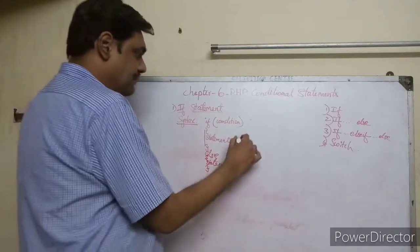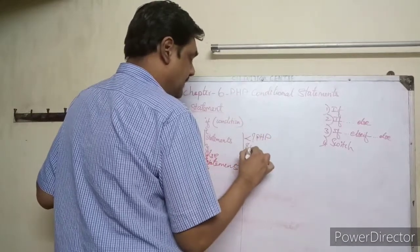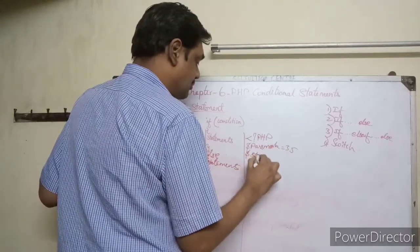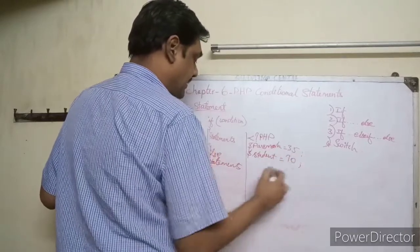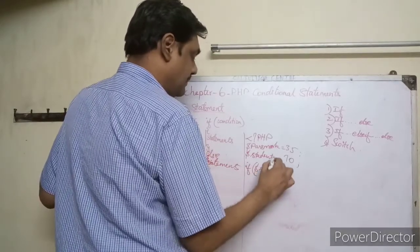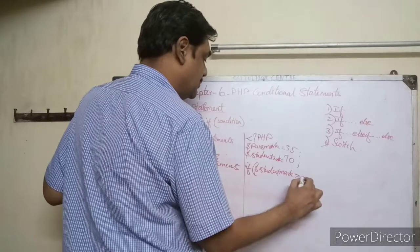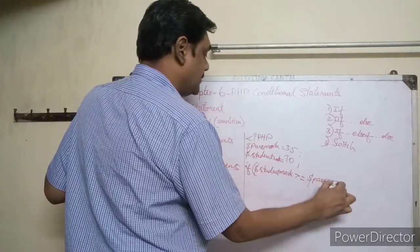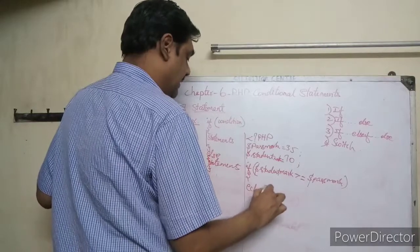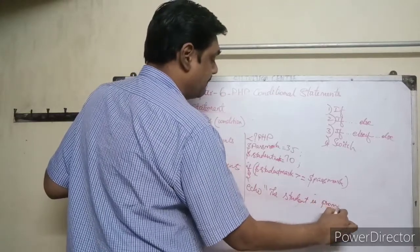For example: dollar pass_mark equals 35, dollar student_mark equals 70. If dollar student_mark is greater than or equal to dollar pass_mark, then print 'The student is promoted'.